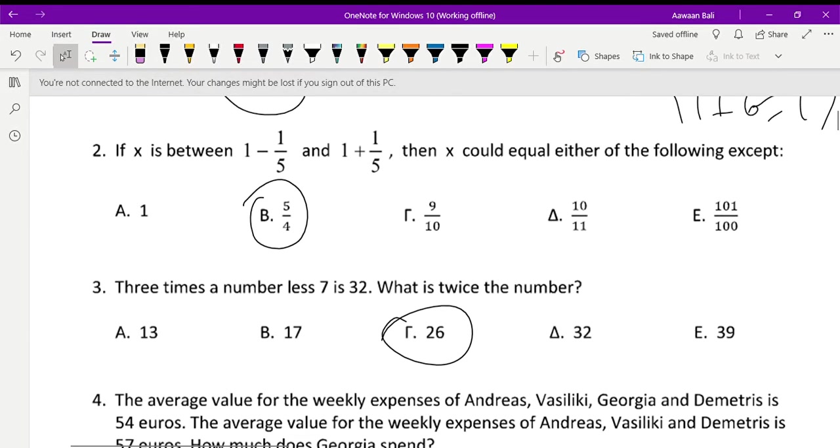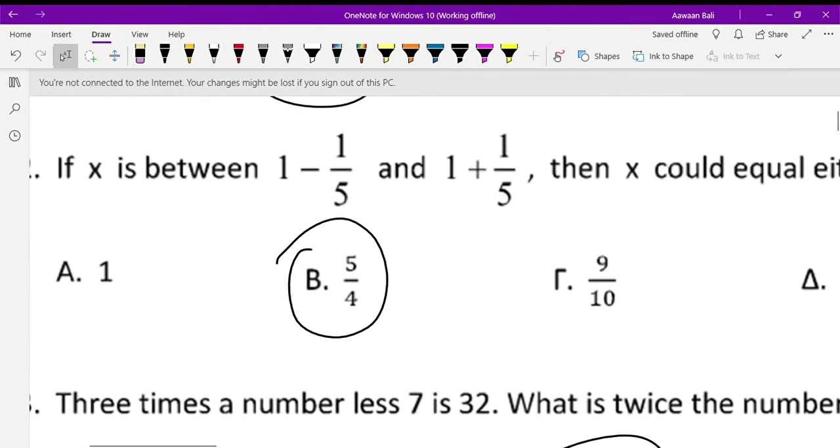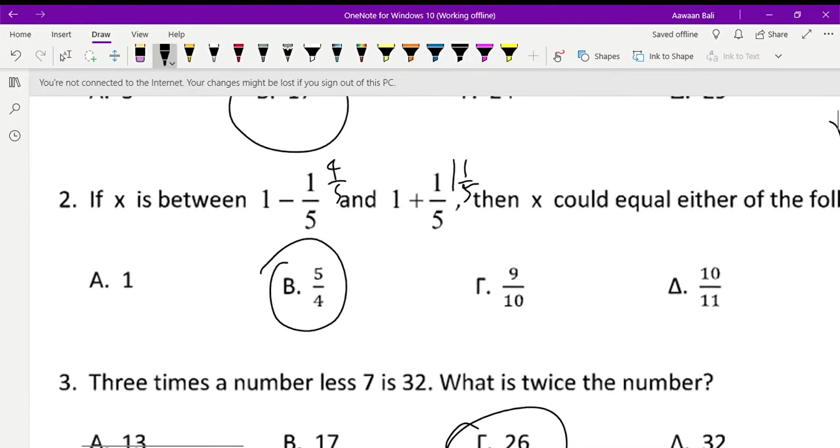Question number 2. If x is between 1 minus 1 upon 5 and 1 plus 1 upon 5, then x could equal either of the following except... The reason the answer is 5 upon 4 is because, basically, if this is 1 minus 1 upon 5, that's 4 upon 5. And this is 1 plus 1 upon 5, so obviously 1 would be in the middle, so alpha is okay.